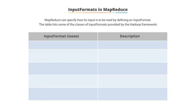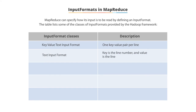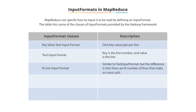The first class is KeyValueTextInputFormat, which is used to create a single key-value pair per line. TextInputFormat is used to create a program that considers a key as the line number and a value as the line itself. NLineInputFormat is similar to TextInputFormat, except that n number of lines make an input split.